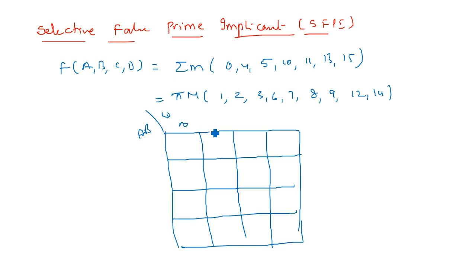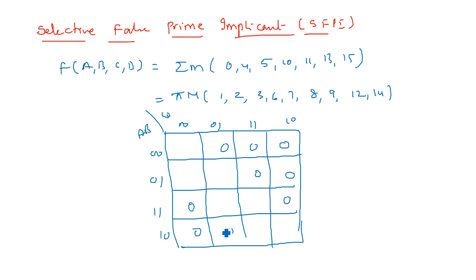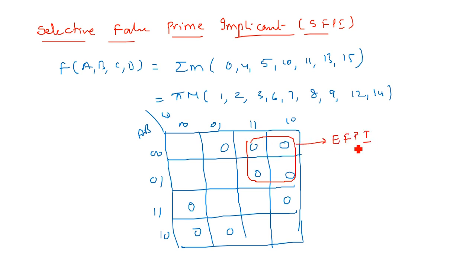Looking at the K-map layout with variables A, B, C, D: the zeros corresponding to max terms 1, 2, 3, 6, 7, 8, 9, 12, 14 are marked. We have four combinations visible. First, let us mark the essential false prime implicant — drawing it in red. This group of four is one essential false prime implicant. What about the remaining zeros?